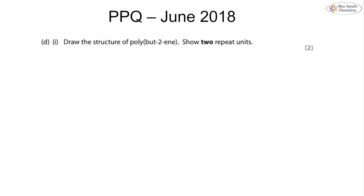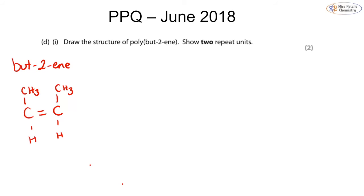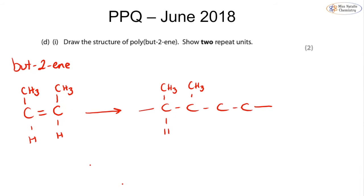Finishing off with a past paper question: draw the structure of poly(but-2-ene) showing two repeat units. Drawing out but-2-ene, we want to keep the specific structure with the carbon-carbon double bond. It doesn't specify cis or trans, so it doesn't matter which way you draw it. I'll draw my two CH₃ groups and then a hydrogen connected. Now when I form the polymer, I take two of these units, so I have four carbons in a row. I always draw my extension bonds and then add in the groups attached to my monomer - the two CH₃ groups and my hydrogens.